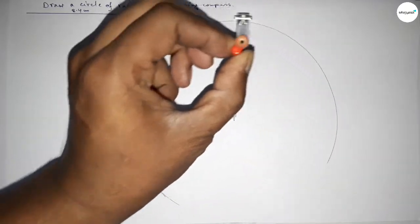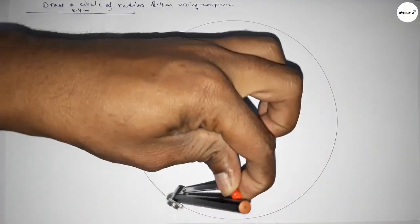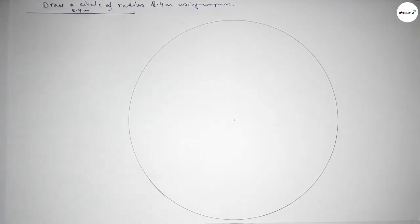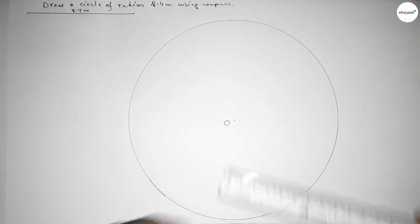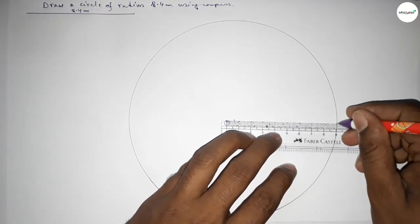This represents a circle, and here at the center is O. Now joining the line here, and this is the radius.